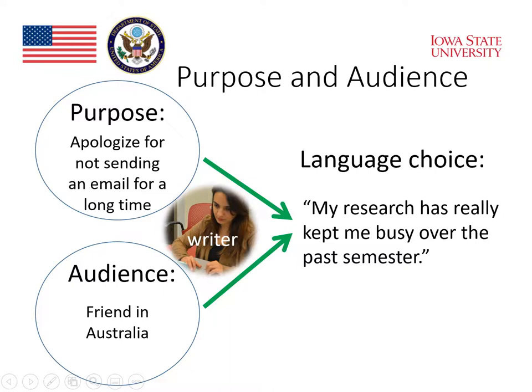The purpose of the email is to apologize for not sending an email for a long time. So what does our writer do? She chooses language that will be appropriate for her friend in Australia, language that will convey the apology that the writer intends to convey. She chooses this language: 'My research has really kept me busy over the past semester.' In English, an apology is a pretty good one if it includes the reason why something wasn't done, or why the act that needs to be apologized for was committed. So that works.